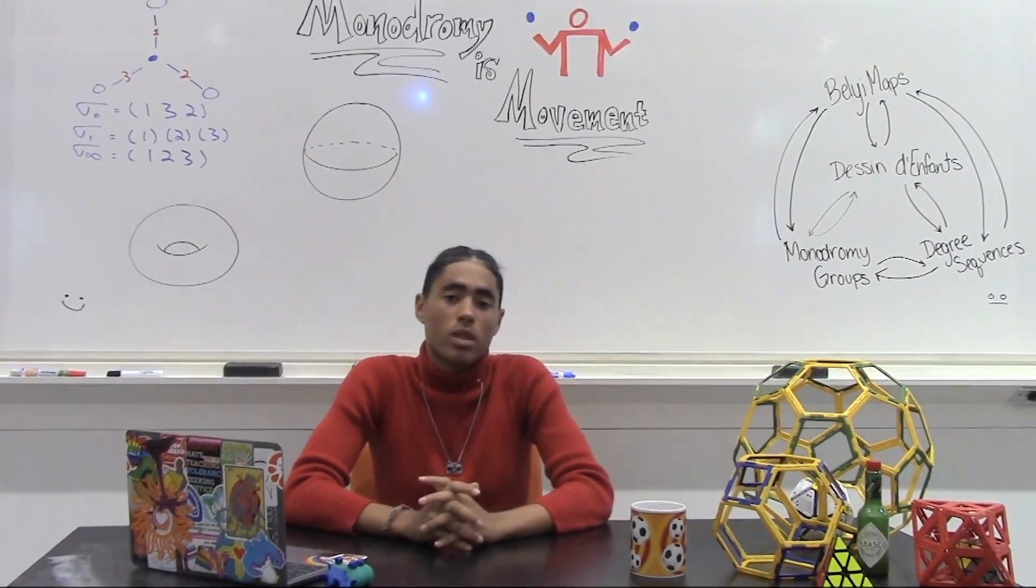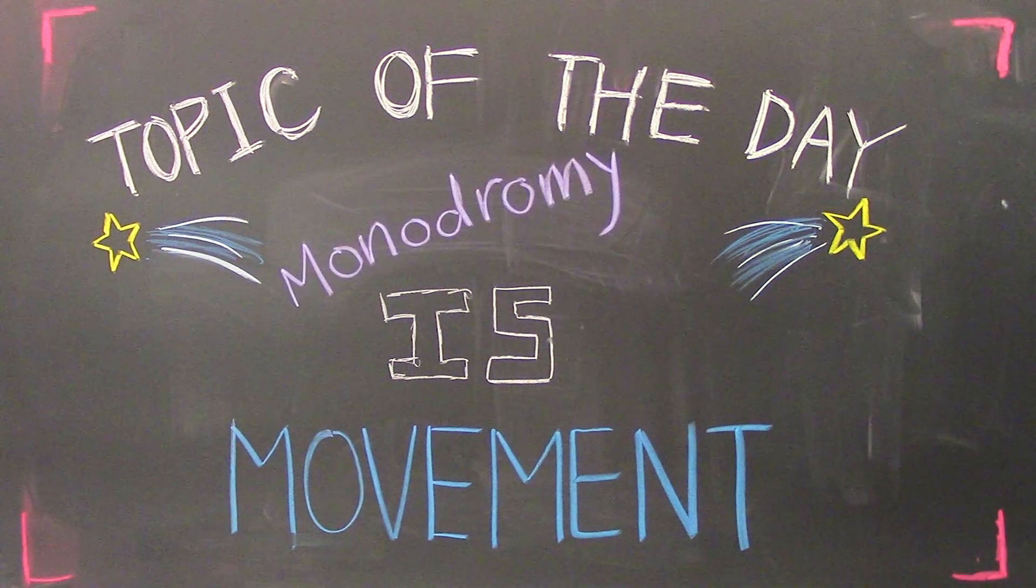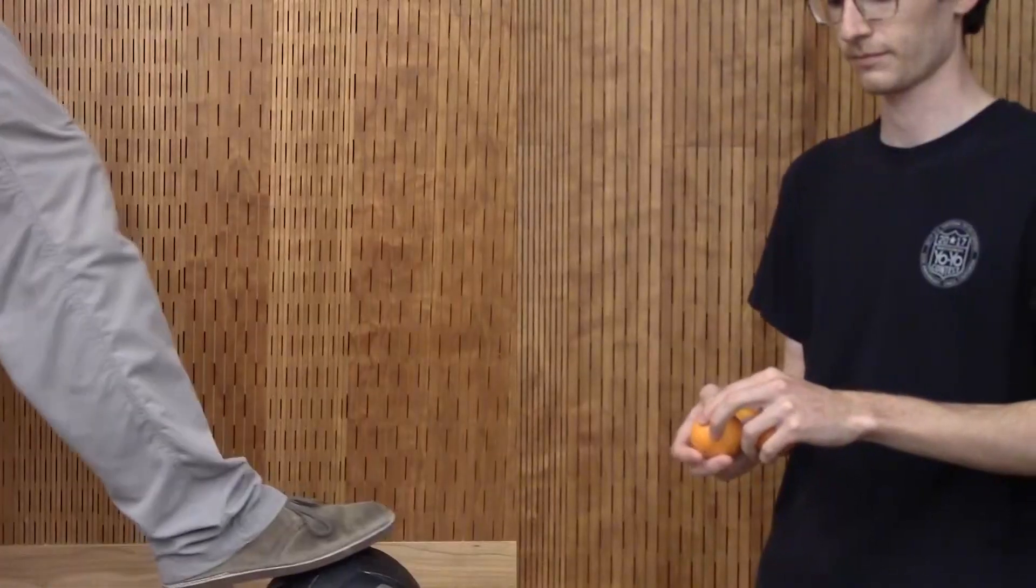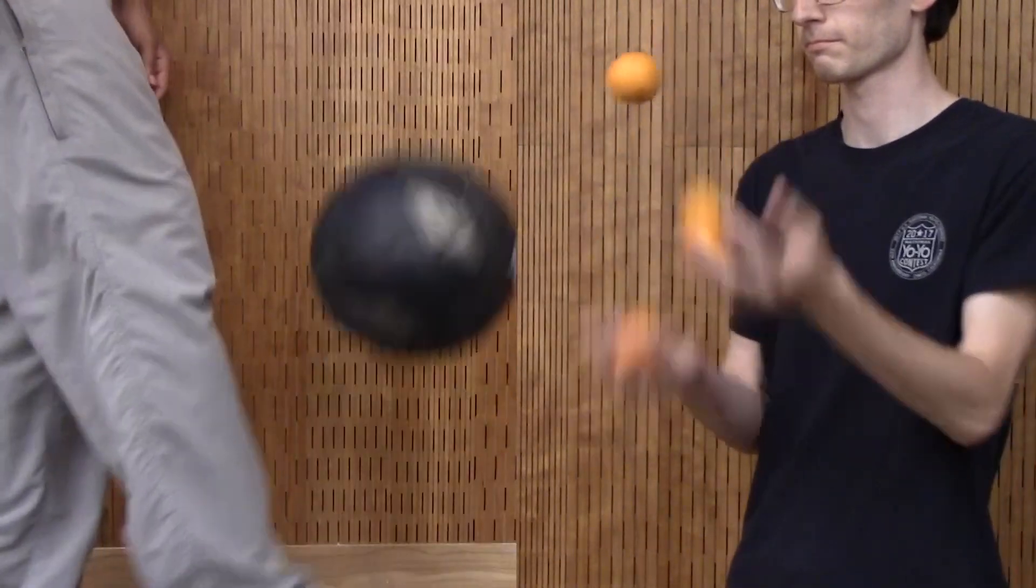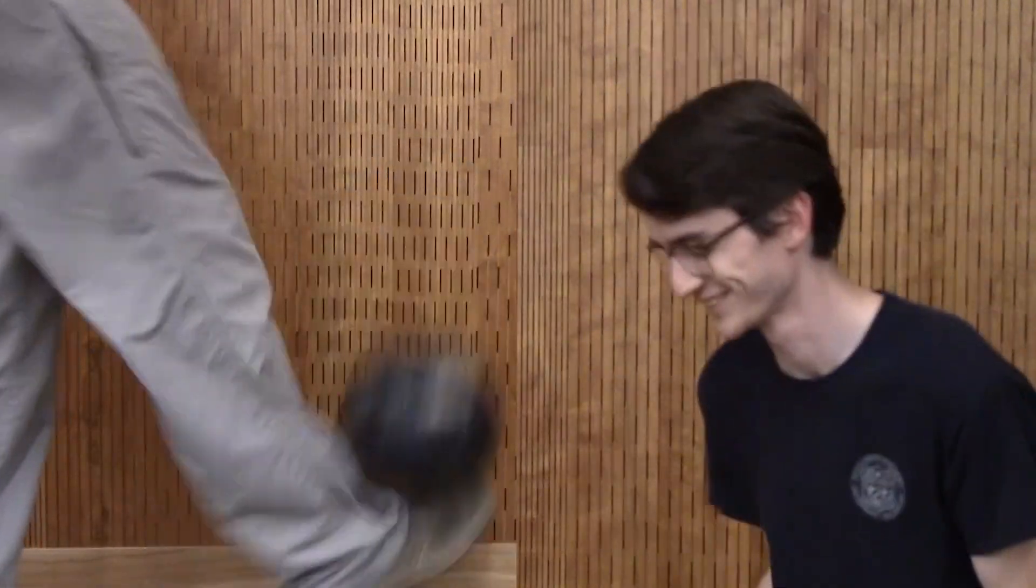Welcome back to Primetime. Today we're going to talk about how monodromy is movement. Here are two different ways to juggle. They take a lot of hours to learn how to do well, but hopefully by the end of this video, you'll learn how they're both related to mathematics.